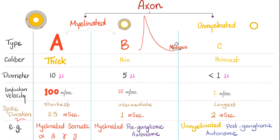Examples of fiber types: type A are the myelinated somatic fibers, subdivided into A-alpha, A-beta, A-gamma, and A-delta. Type B are the myelinated pre-ganglionic autonomic fibers. Type C are the unmyelinated post-ganglionic autonomic fibers — the reason pre-ganglionics are myelinated but post-ganglionics are not is covered in the autonomic physiology lectures.